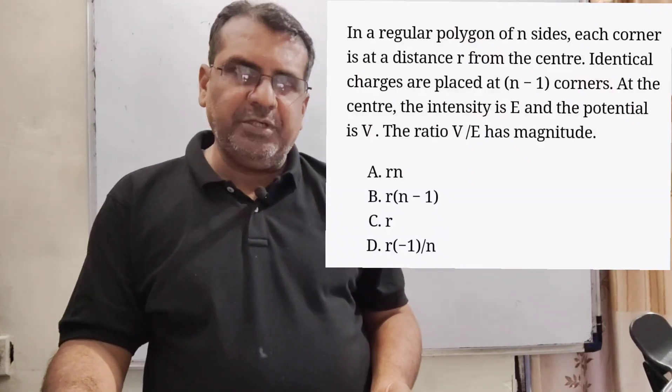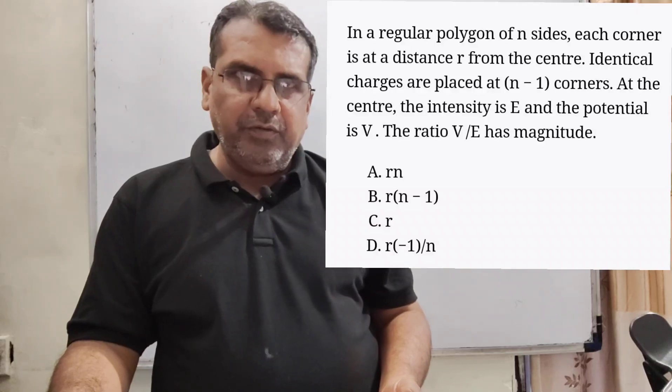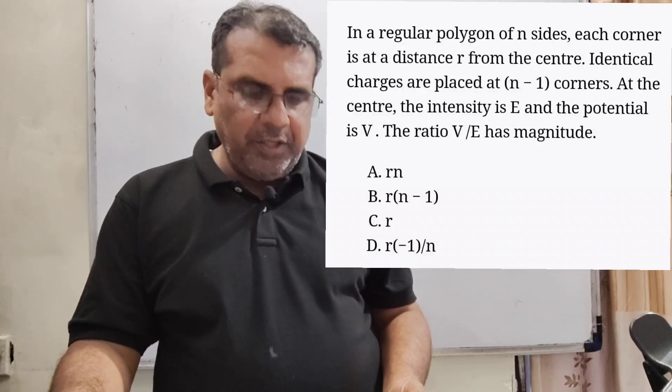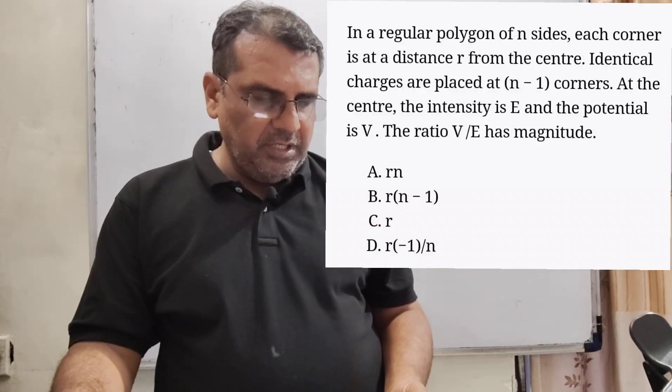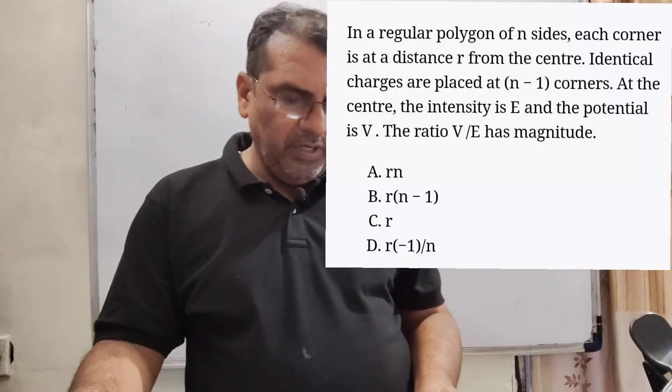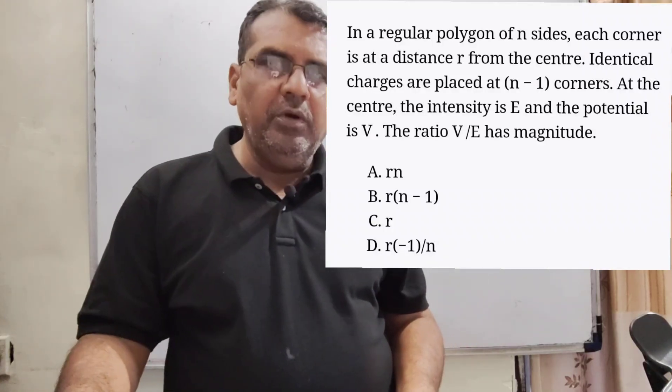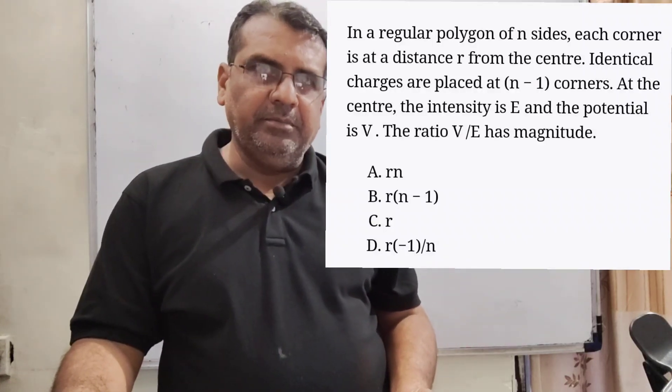Here we have given four options. Options are A, r into n, option B, r into n minus 1, option C, n minus 1 by r, and option D, r into n minus 1 by n.